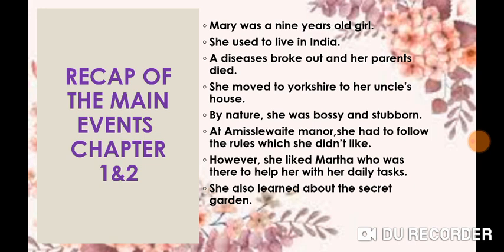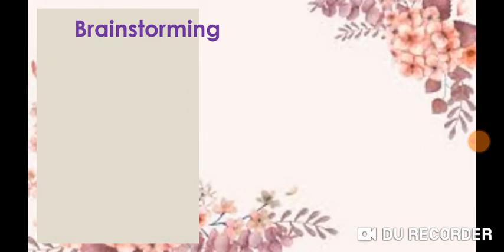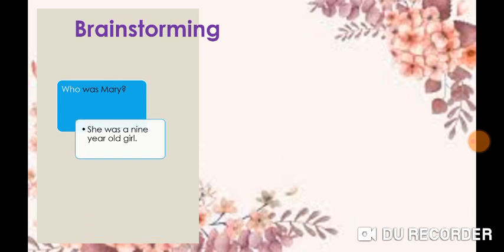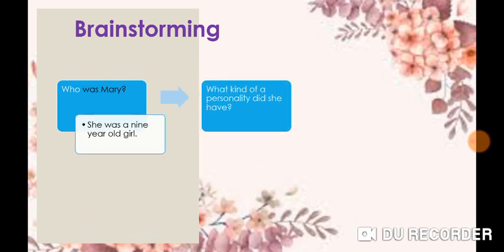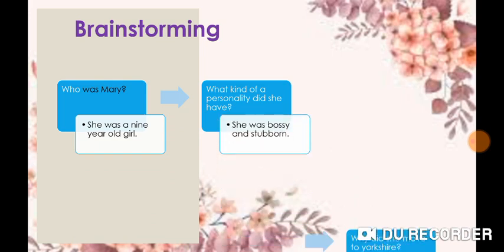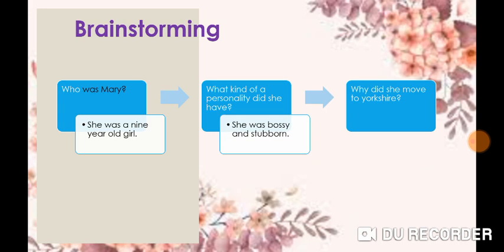So when she came to Misselthwaite Manor and she had to follow the rules, she didn't like it. However, she liked Martha who was there to help her with her daily tasks. Martha was a friendly girl, so she liked her. Then she also learned about the secret garden. Now can you tell who was Mary? What kind of personality did she have? Why did she move to Yorkshire?